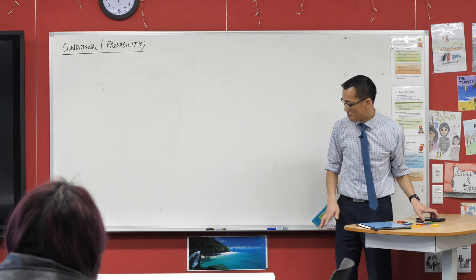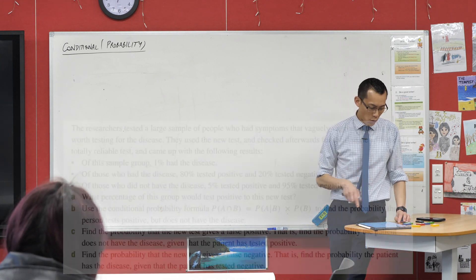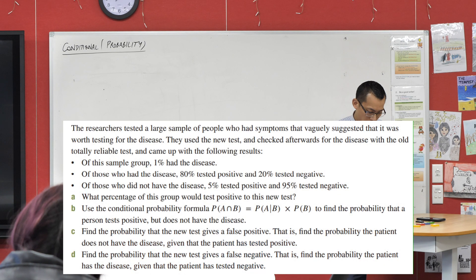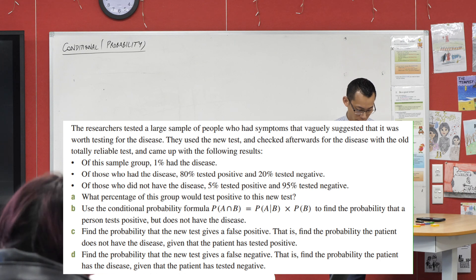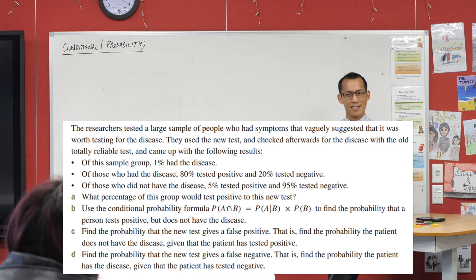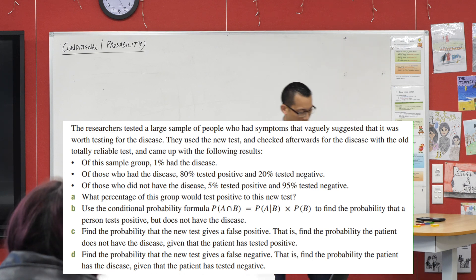I'm going to suggest that actually the best order to do this question in is not the order that's being provided. I think we should do part B first. So what's the situation? I'm going to first write down what I understand about the situation and then we'll launch into part B, and then I think B leads into A and then C and so on, which is weird and not the way they laid it out.